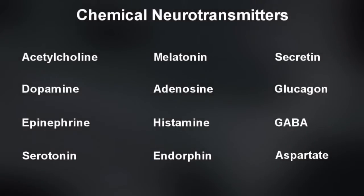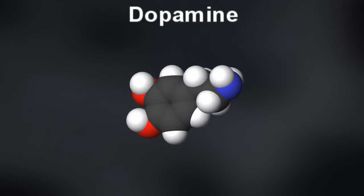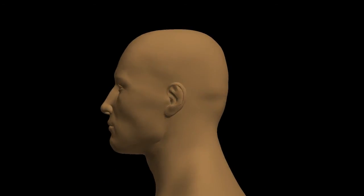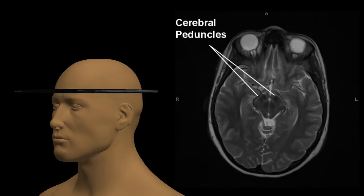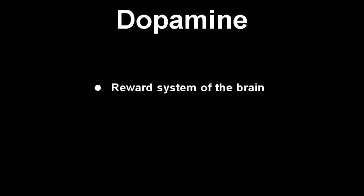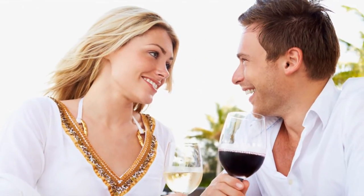In Parkinson's, the problematic neurotransmitter is dopamine. Dopamine is a neuroendocrine transmitter produced in the area of the brain called the substantia nigra, located in the cerebral peduncles that connect the cortex to the brain stem. Dopamine mediates the reward system of the brain and is involved in fine motor control, the dominant deficit and feature of Parkinson's disease. With regards to the reward system, the euphoric feeling one gets when receiving a nice compliment or enjoying a fine meal is produced by the release of dopamine in the forebrain.